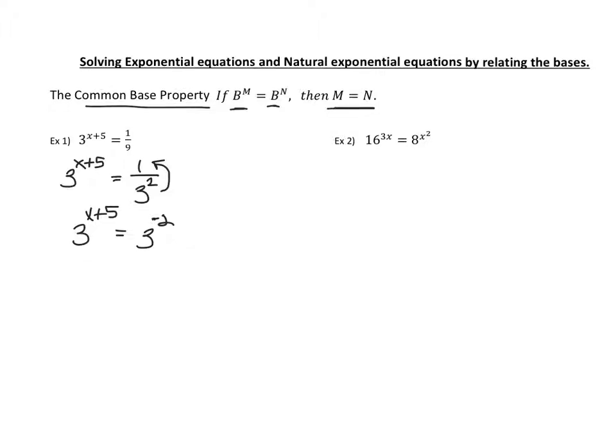Our rule says if we can get the same bases, which we've done here with 3 and 3, then we can assume from our common base property that we can set our exponents equal to each other and solve for x. By subtracting both sides by 5, we get x equals negative 7.